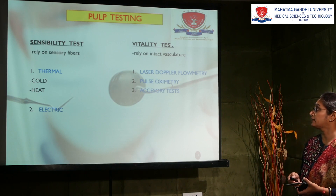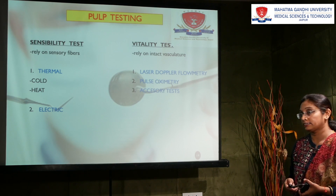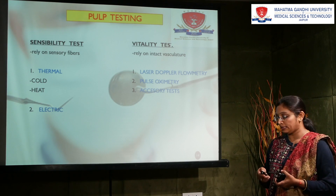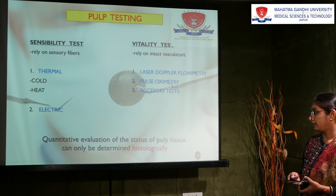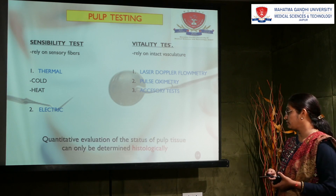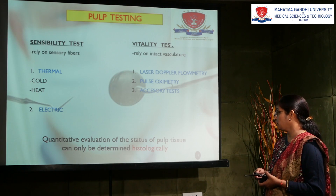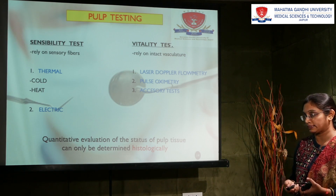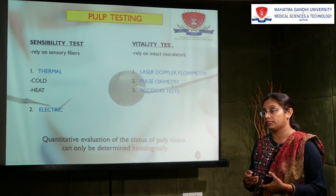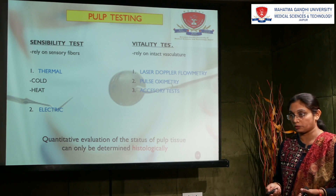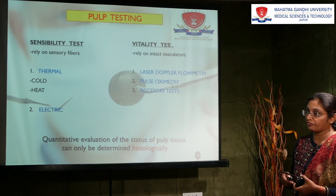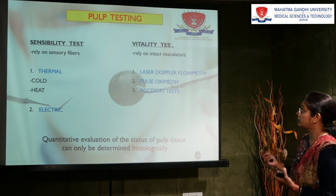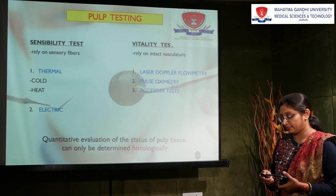Among these pulp testing methods, the vitality tests are more reliable than the sensibility tests. The quantitative evaluation of the status of the pulp can only be determined histologically when the tooth is extracted. Under normal clinical conditions, this is not possible, so we majorly depend upon the pulp vitality test.